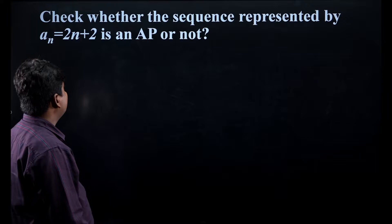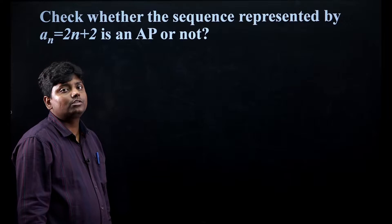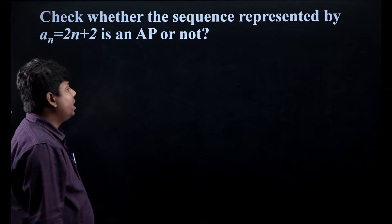The given question is that we have a sequence aₙ = 2n + 2 and we need to check whether this sequence is an arithmetic progression or not. So how can we solve that?